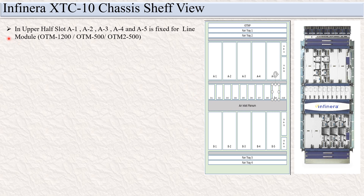In the upper half slot, A1, A2, A3, A4, A5 — these five slots are for the line module. In this slot, you can insert OTM 1200, OTM 500, or OTM 2500 cards.